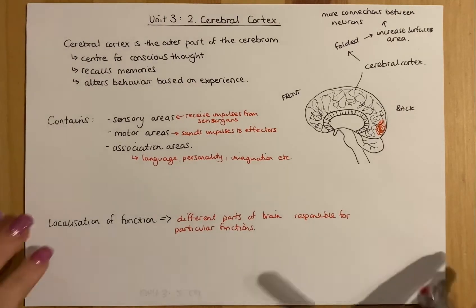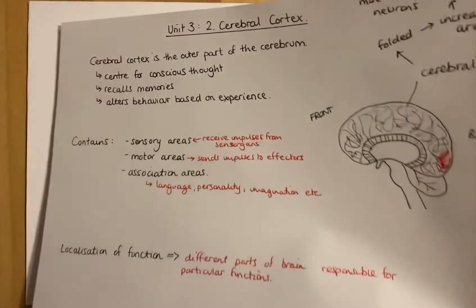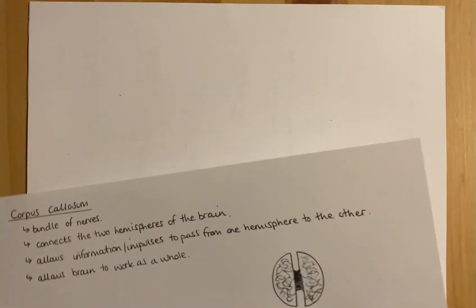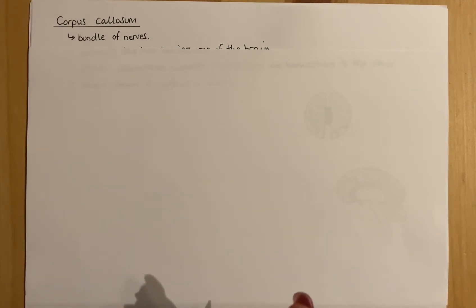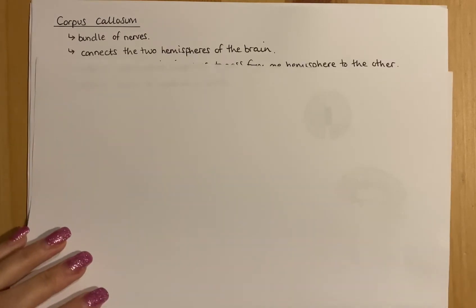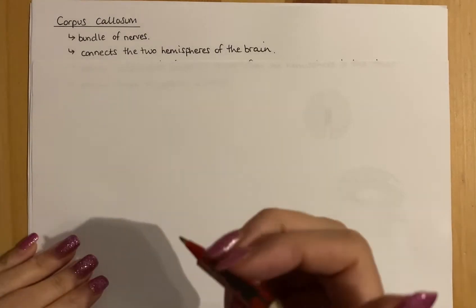The next part is what's called the corpus callosum. The corpus callosum is a really common answer for a lot of questions. It's essentially a bundle of nerves that sits in between the two hemispheres of the brain. Hemi means half, sphere means sphere, so each side of your brain is a hemisphere — and importantly, you should refer to them as hemispheres, not sides of the brain.